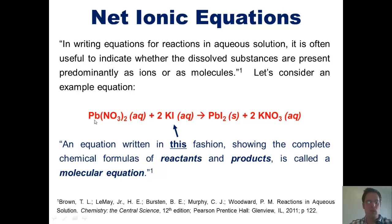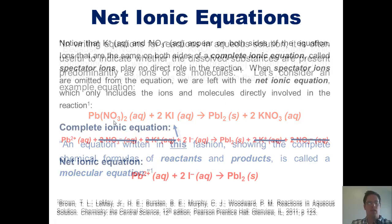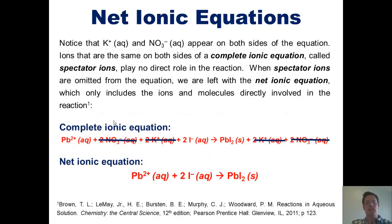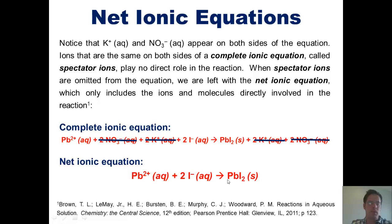The lead would get together with the iodide and form an insoluble precipitate, lead iodide, while the potassium and the nitrate would dissolve completely in the solution. This is summarized neatly by this equation. It only shows the ions — lead and iodide — that actively do anything, that is, form lead iodide precipitate.